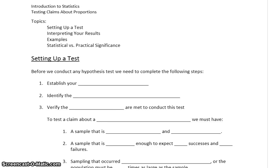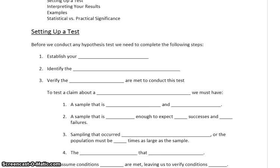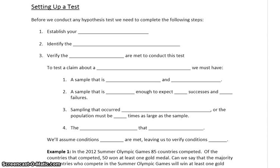In this section, we want to introduce our first hypothesis test. We want to test a claim about a proportion from one sample. We're going to slowly walk through an initial example where we talk about how we actually set up the test, the pieces we need to have in place, and then we'll move on to interpreting our results to get that final and complete answer.